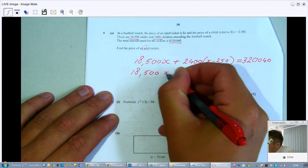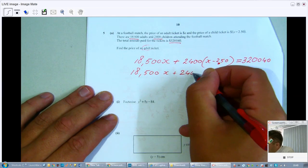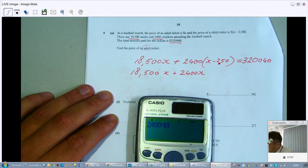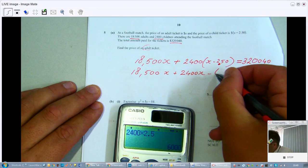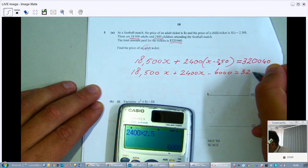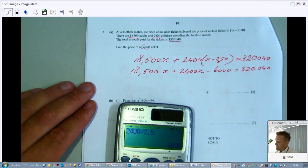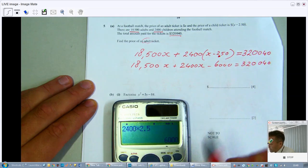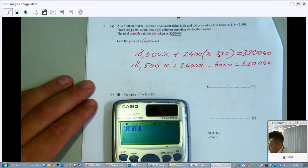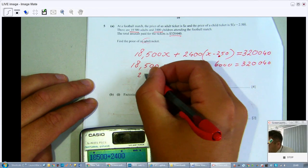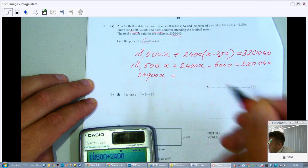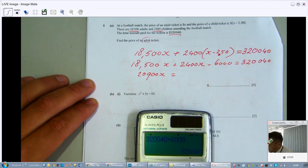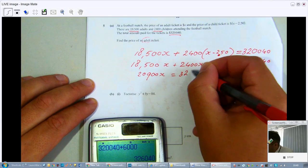Okay, so let's expand those brackets first. 18,500X plus 2,400X. 2,400 times minus 2.5, let's use a calculator for that. So that's minus 6,000 equals 320,040. Okay, continue. Then I'm going to simplify. So if I rearrange it, so it says 18,500 plus 2,400X. So that is 20,900X equals 320,040 plus 6,000. That's 326,040.